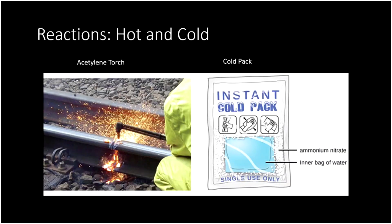Here are two different reactions — one that gets hot and one that gets cold. First, we have our acetylene torch. Acetylene is a chemical compound that can be burned with oxygen, so this is a combustion reaction and it gets really hot — so hot that it can melt those train tracks. When a reaction releases energy like that, we call it exothermic.